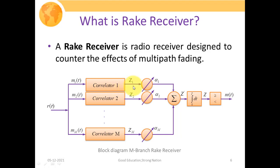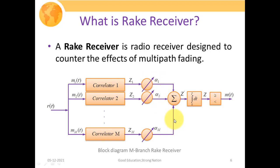The output of the correlators is represented as Z1, Z2 up to ZM. These are then passed through a weighing network, with weighing coefficients alpha 1, alpha 2 up to alpha M. These weighing coefficients are defined based on the SNR level received in each particular multipath component. If the received SNR of a multipath component is high, a higher value is assigned to it; if the SNR is lower, a lower weighing factor is assigned. Then all components are passed to a summer for linear combination.